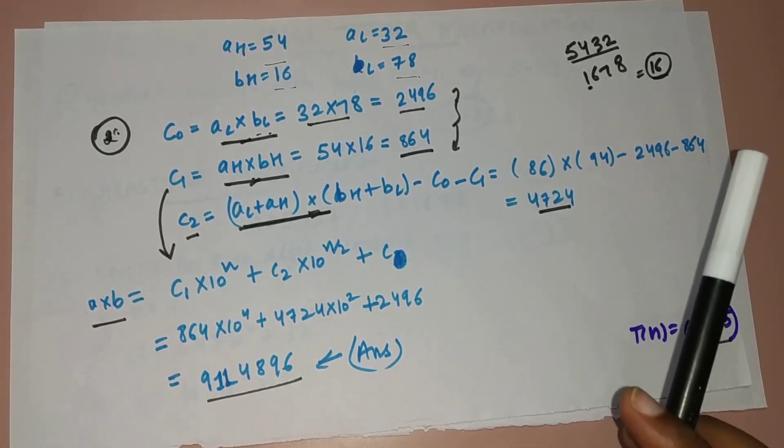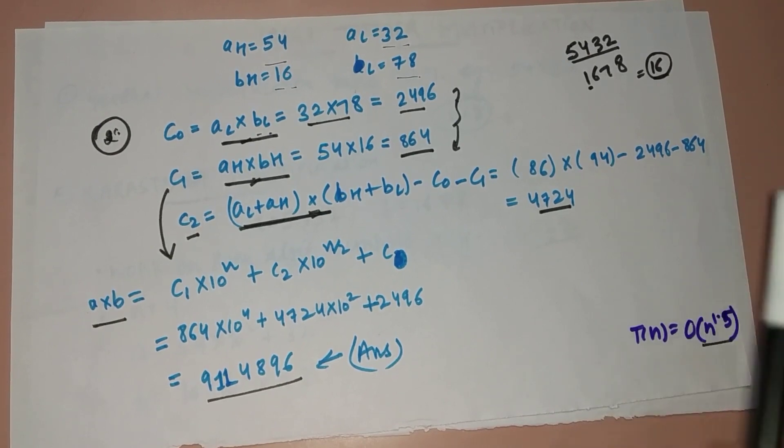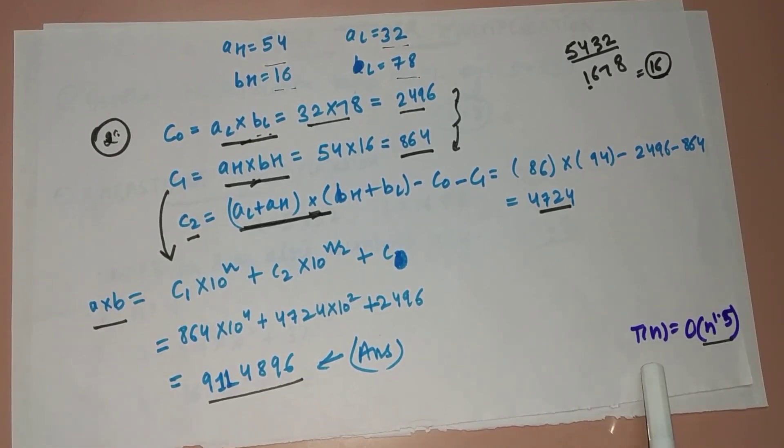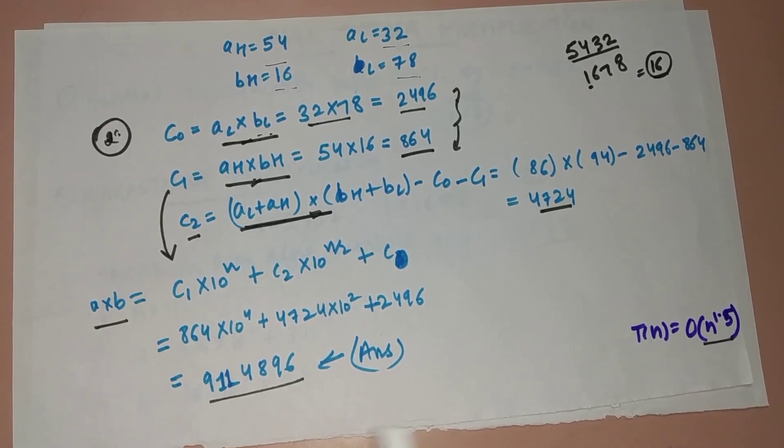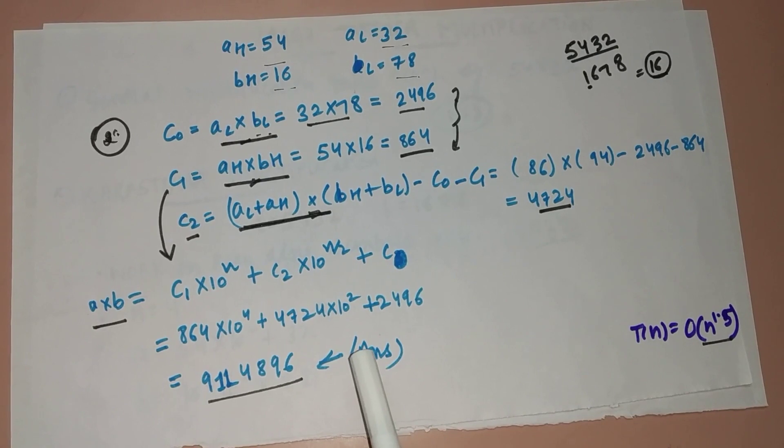Hence the time complexity, because the system takes less time in calculating subtraction and addition and it takes more time in division, modulus, and multiplication. The time complexity by Karatsuba is just O(n^1.5). That's why we use Karatsuba multiplication.